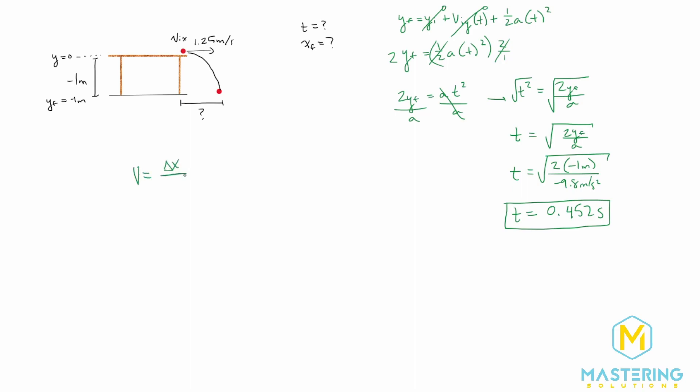So the velocity equation is what we're using, which is the change in the distance over a change in time. We'll rearrange it for this by multiplying both sides by t. So the change in the x is equal to velocity times time. So the distance is equal to the velocity, which we said 1.25 meters per second squared, and then we'll multiply it by the time of 0.452 seconds.